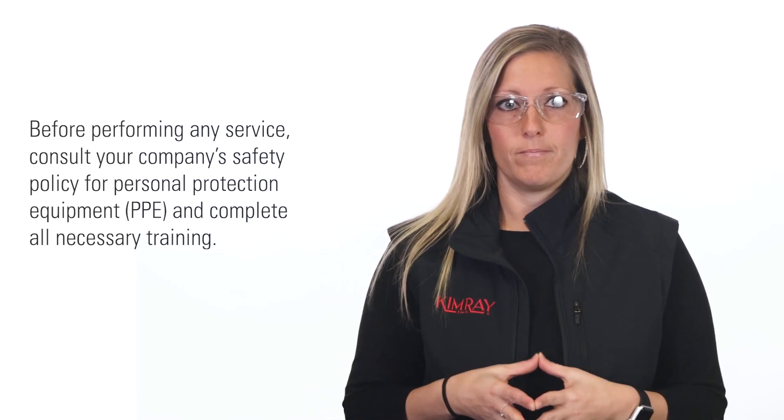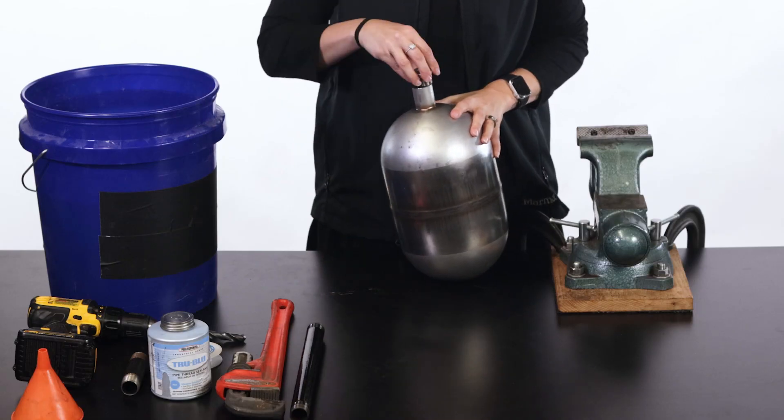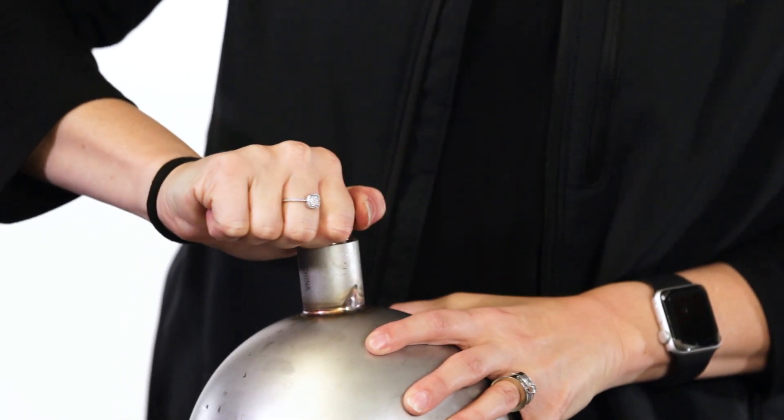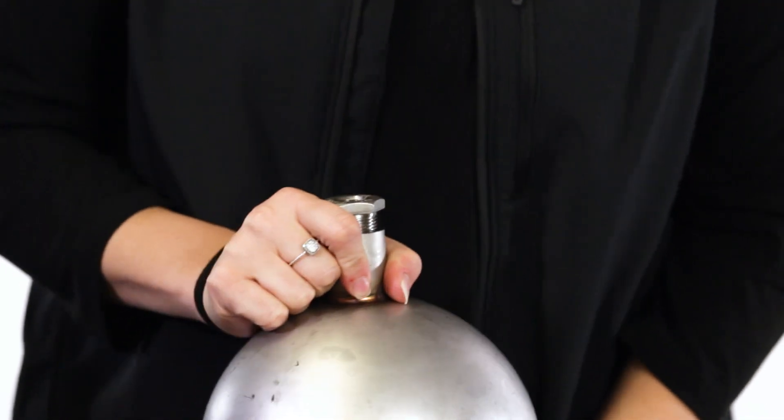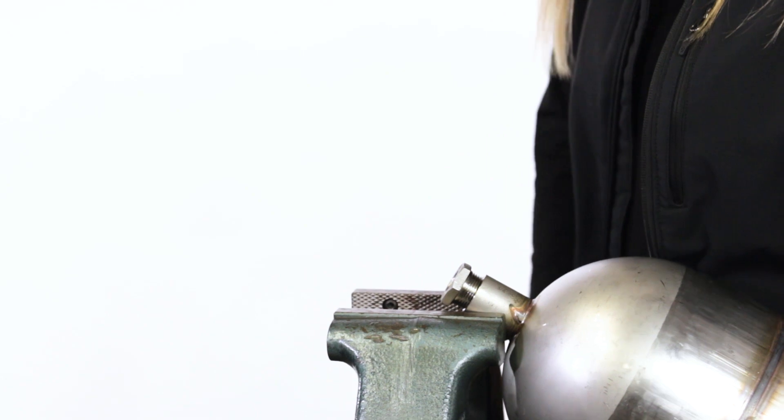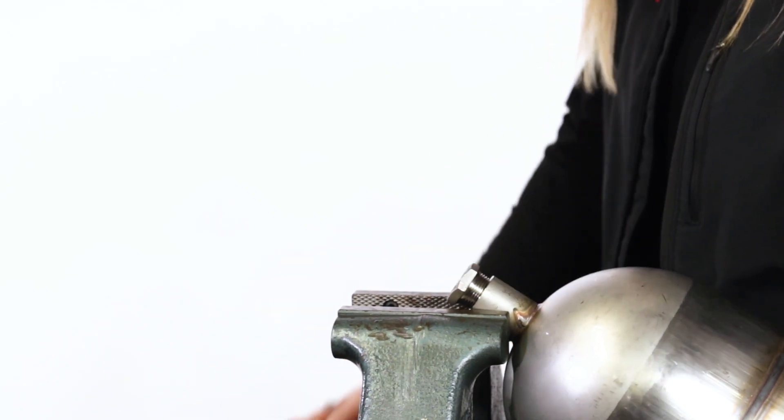After putting on your safety glasses and all of your company's requirements for PPE, let's get started. First thread a short pipe nipple or bushing onto the float ball to protect the threads. This will prevent incidental damage and ensure a good seal. I'll be using a vise to stabilize the float. Make sure you're doing this safely with whatever you have available.